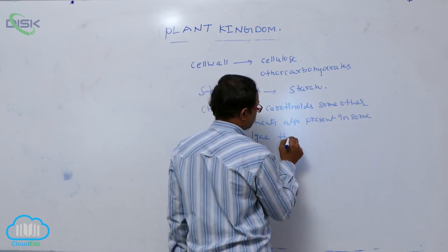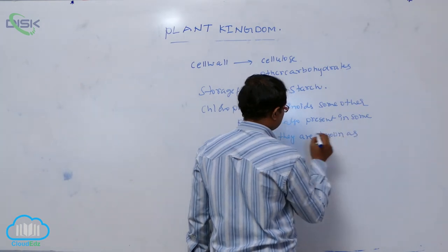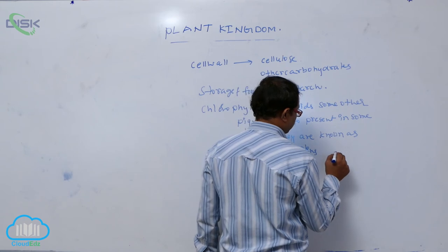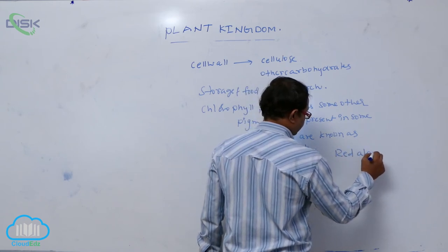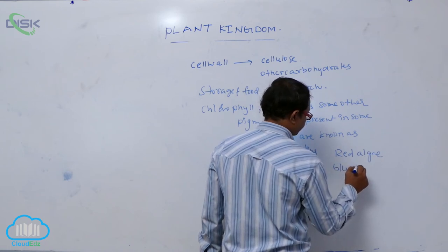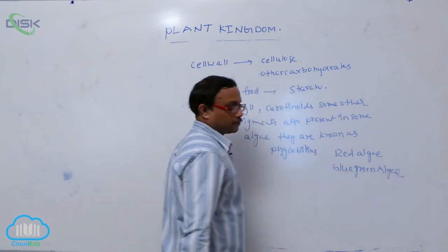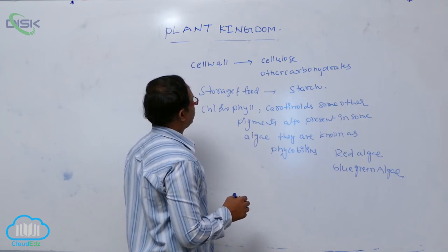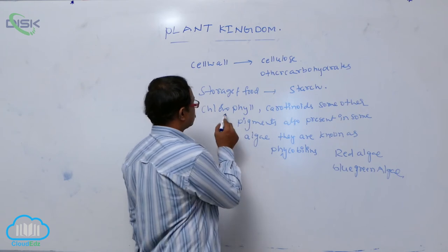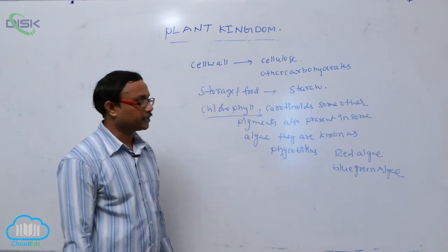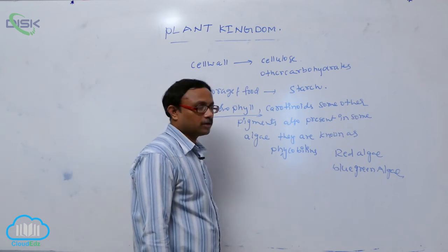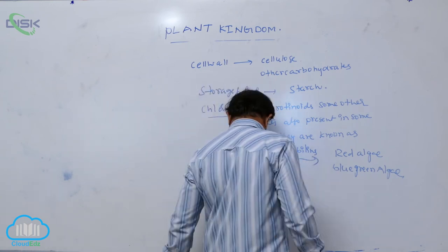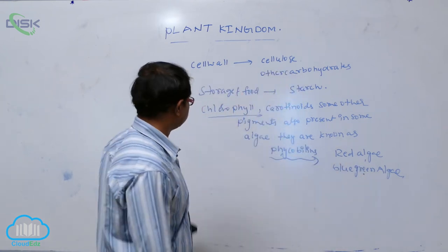These additional pigments are known as phycobilins. Phycobilins are present in red algae and blue-green algae. So to summarize: cell wall is made of cellulose and other carbohydrates, food is stored as starch, and generally chlorophyll along with carotenoids is present. Some algae also have phycobilins, mainly present in red algae and some blue-green algae.